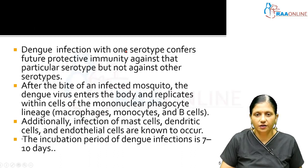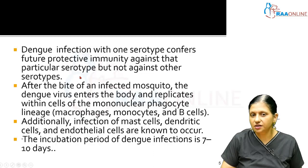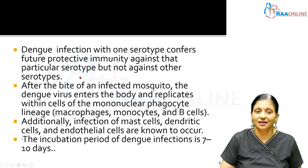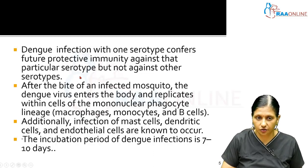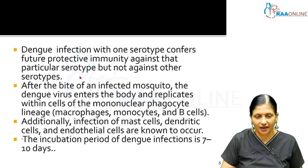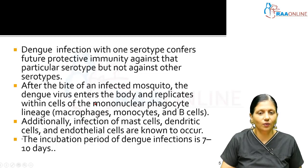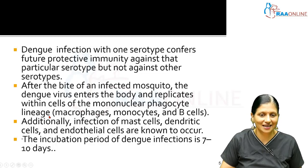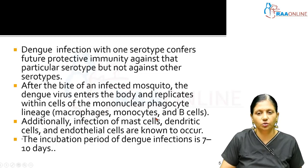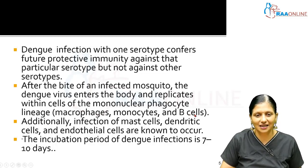Dengue infection with one serotype confers future protective immunity against that particular serotype, but not against other serotypes. After the bite of an infected mosquito, the Dengue virus enters the body and replicates within cells of the mononuclear phagocyte lineage, such as macrophages, monocytes, and B cells.